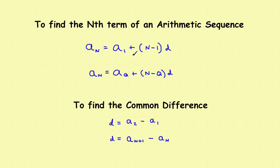From your algebra days, the rules for arithmetic sequences are: if you know the first term and the common difference, you can find any term a_sub_n. It doesn't have to start at a_sub_1 — the second formula lets you start from any known term. The common difference is simply the difference between any two consecutive terms: a_sub_2 minus a_sub_1, or a_sub_(n+1) minus a_sub_n.